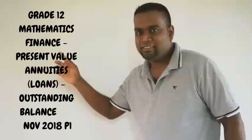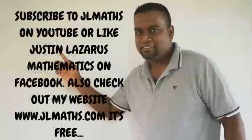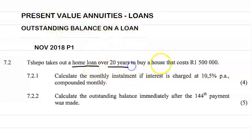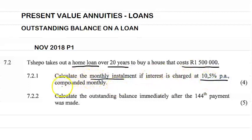Hi guys and welcome to another video. Today we're going to be looking at present value annuities and we're going to try and find the outstanding balance on a loan. The question is from the November 2018 paper: Sepo takes out a home loan. When the word 'home loan' is used, remember that is a present value annuity.